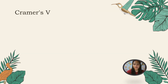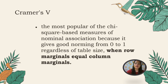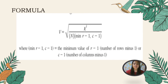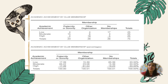Cramér's V is the most popular chi-square-based measure of nominal association because it gives a good norming from 0 to 1 regardless of table size, when row marginals equal column marginals. The general formula for Cramér's V is: V equals the square root of chi-square divided by n times (r minus 1) or (c minus 1). To illustrate, suppose we gathered data showing the relationship between membership in a student organization and academic achievement for a sample of college students.